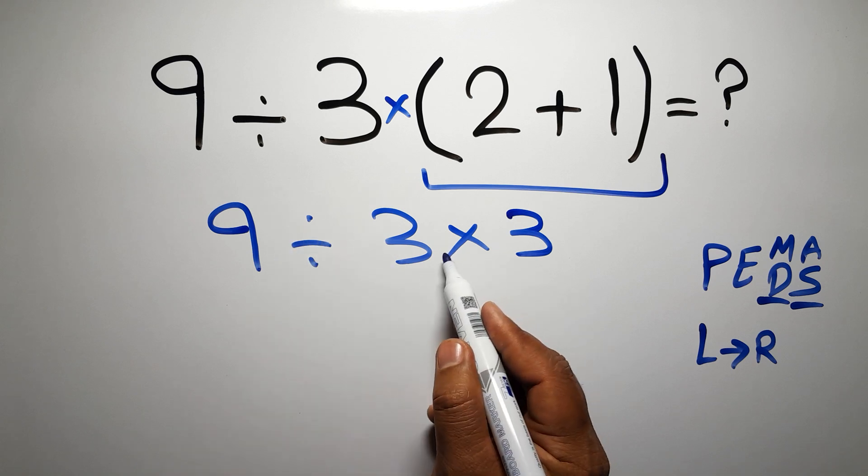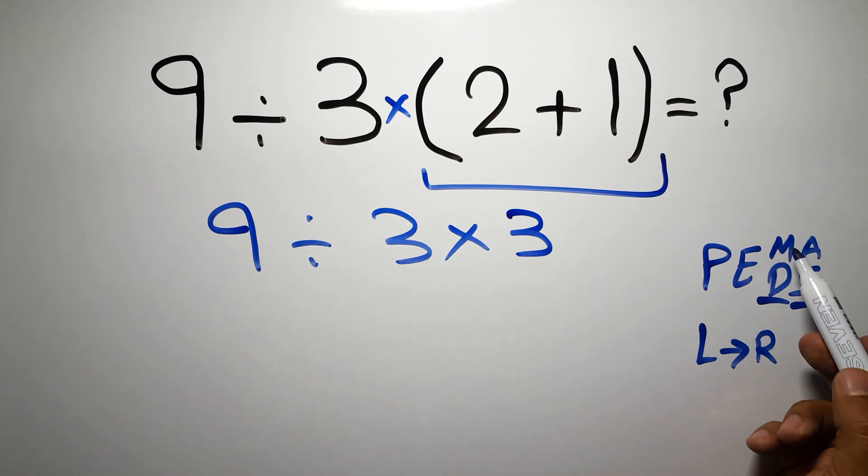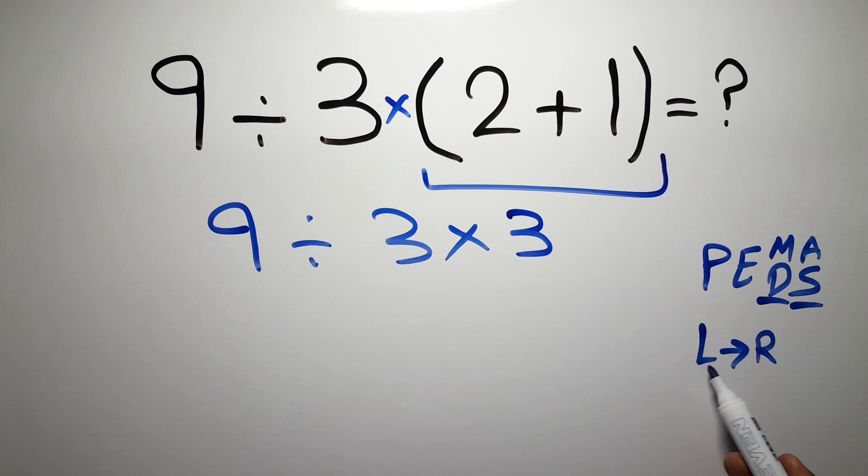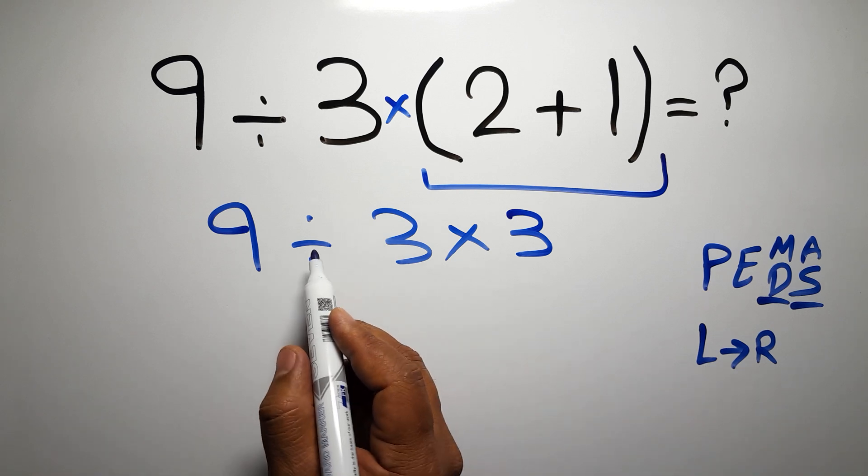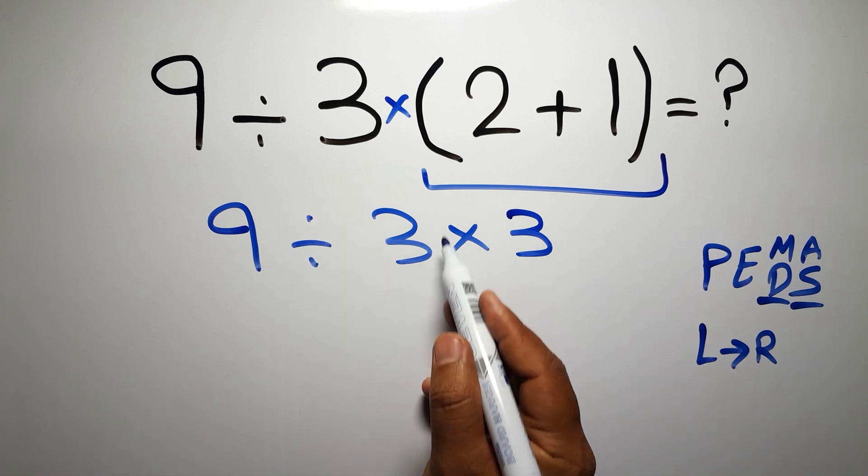Now we have 1 division and 1 multiplication. As I said, multiplication and division have equal priority, and we have to work from left to right, so here first we have to do this division, then this multiplication.